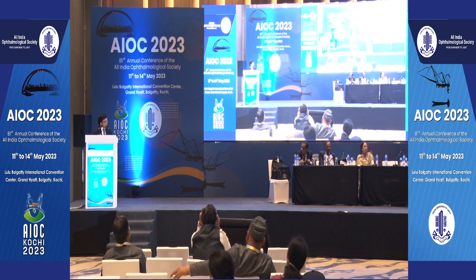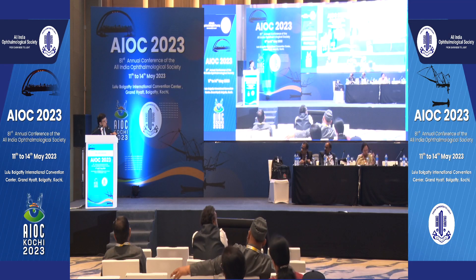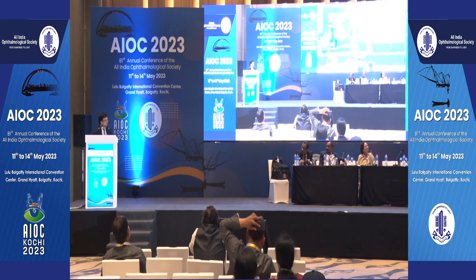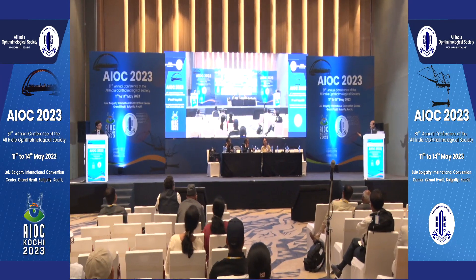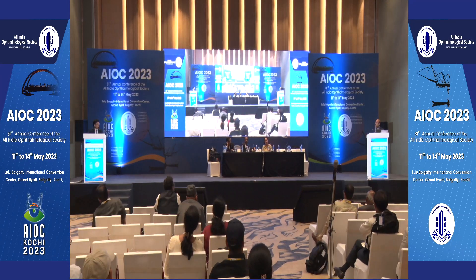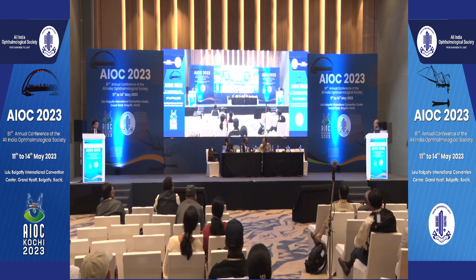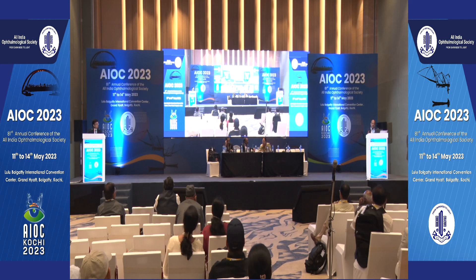If suprachoroidal triamcinolone doesn't work and edema persists, vitrectomy is an option even without obvious traction — it relieves subtle vitreomacular traction and also improves macular oxygenation post-vitrectomy. The moderator's summary: for chronic refractory cases, normalize systemic parameters first. If peripheral ischemia is present, targeted laser is the next option. If these are ruled out, intravitreal injections are the remaining choice.